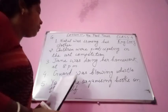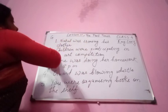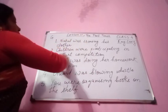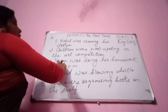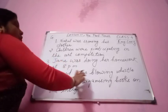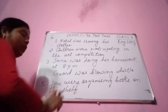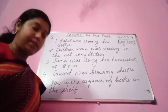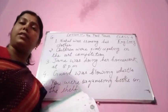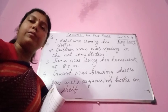Once again from number one: Number one — Nakul was ironing his clothes. Number two — Children were participating in the art competition. Number three — Jane was doing her homework at 8 p.m. Number four — God was blowing the whistle. Number five — You were organizing books on the shelf. Please write the answers in exercise G in your English language copies. Thank you.